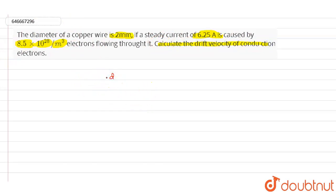In this question we have the diameter d of the copper wire given as 2 millimeters, and the steady state current I value as 6.25 amps. According to this, we know the formula: I = neAv.